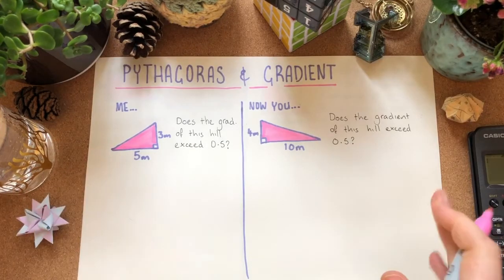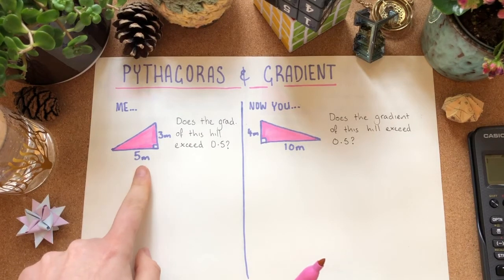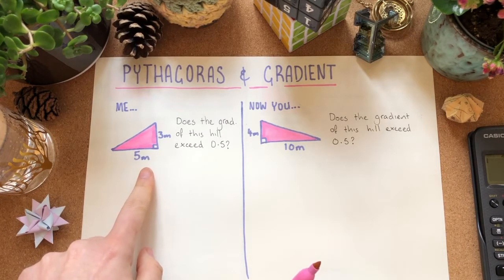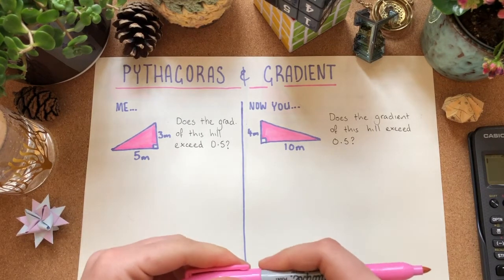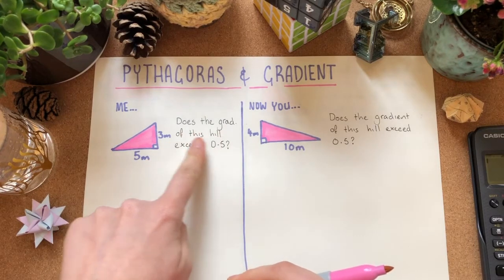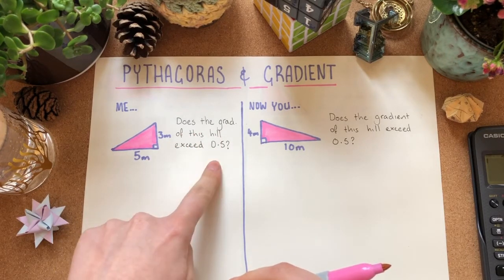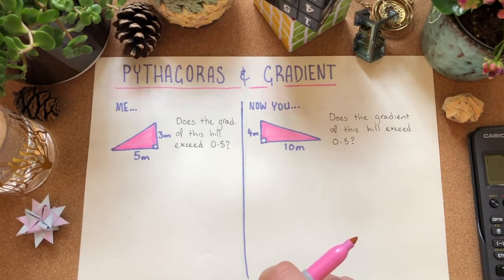So I'm going to try a question and then I'll give you a question to try too. First question here we've got a right angle triangle that's important because Pythagoras doesn't work for any other kind of triangle and also gradient only works for right angle triangles and it says does the gradient of this hill exceed 0.5? Good question. We actually have everything we need right now.